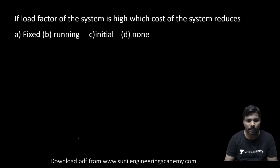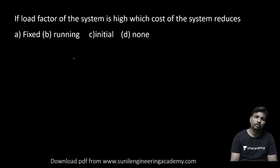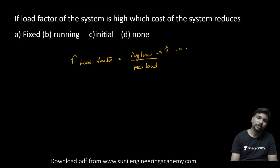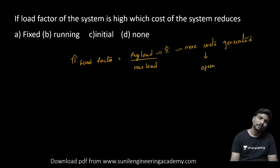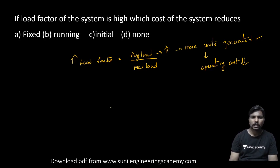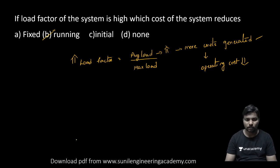Next: if the load factor of the system is high, which cost of the system is reduced? Load factor equals average load divided by maximum load. As load factor is high, average load is more, meaning more units are generated or consumed. For the same fixed cost, generating more units means operating or running cost per unit is less. So a high load factor reduces the operating or running cost.